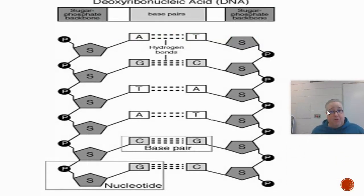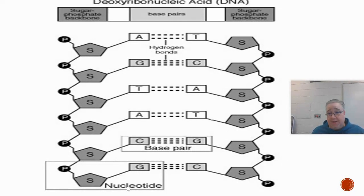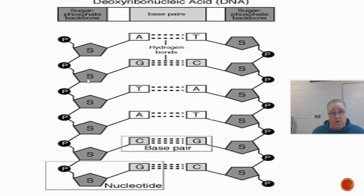Before we get into the process of replication, I want to go back to this diagram about the structure of DNA. The basic subunit of DNA is called a nucleotide, which is made up of a phosphate group, a sugar called deoxyribose, and a nitrogen base. There are four different nitrogen bases. A nucleotide — phosphate, sugar, and base — connects to another nucleotide on and on, forming a continuous strand. On the other side we have the same thing: another chain of nucleotides.